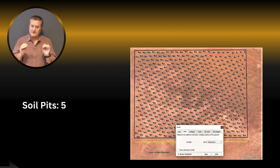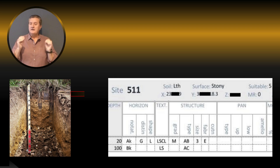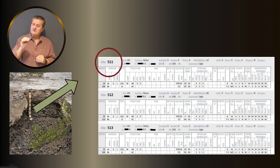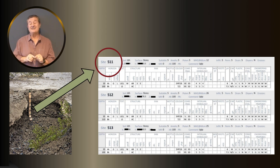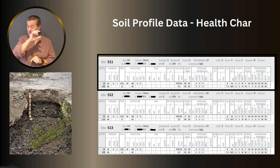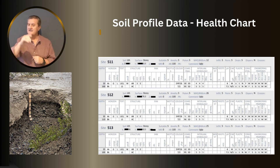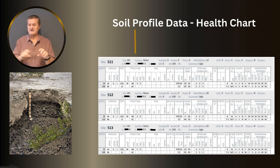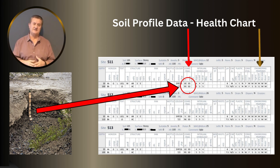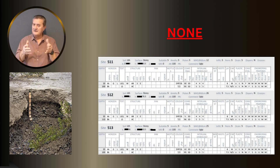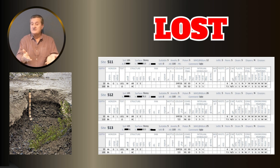Those dots represent soil pits with their coordinates — you can always locate them afterward. Each one of those pits has its own health chart. Not only what you see about the surface, but most importantly what you see and measure below the surface: the depth and thickness of every single layer, horizon shapes, texture of each layer, structure, coarse fragments we're talking about, engineering properties, plasticity, and so on — none of which current remote sensing technology can measure.